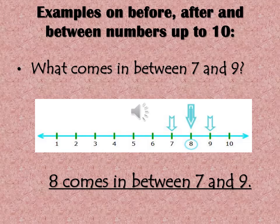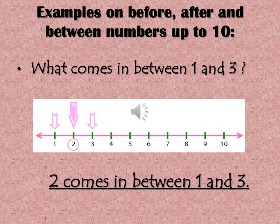What comes after eight? Nine. What comes before eight? It's seven. So what comes between seven and nine? Eight comes between seven and nine. Let's do it quickly. What comes between one and three? One, two, and three. What comes in between? It's two. Two comes in between one and three.